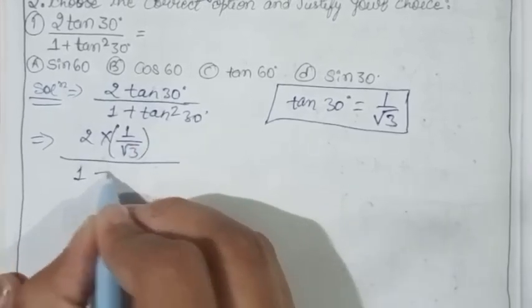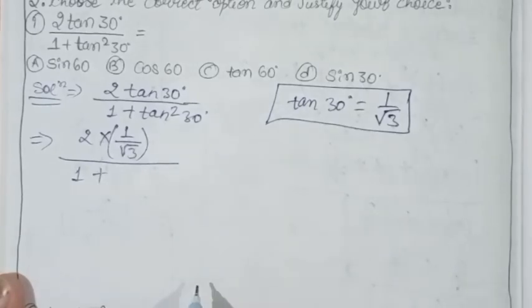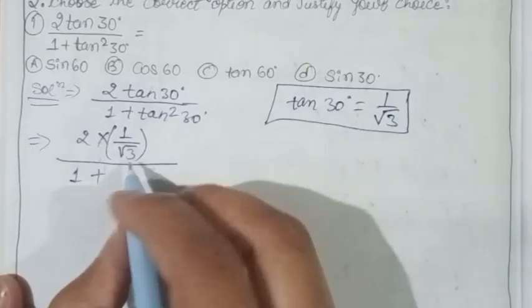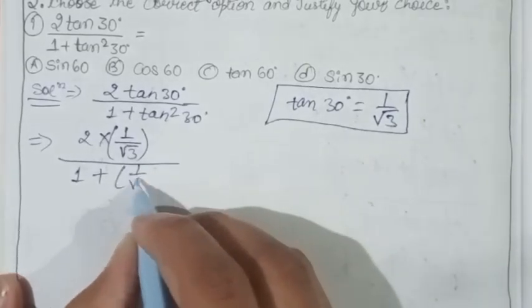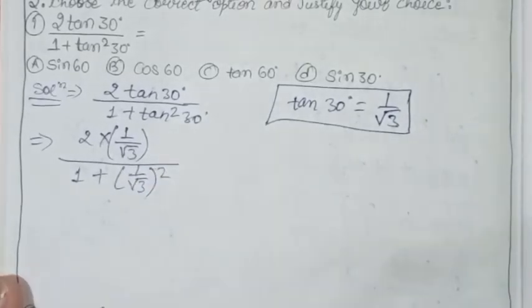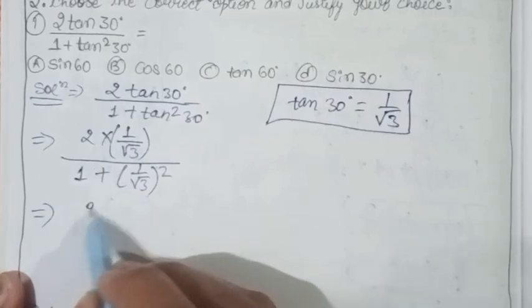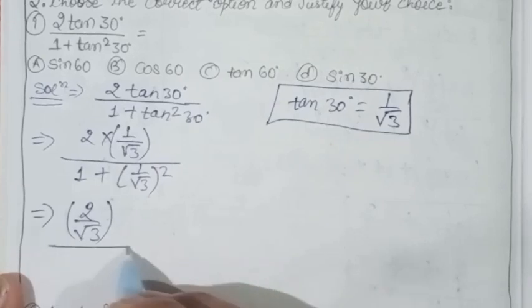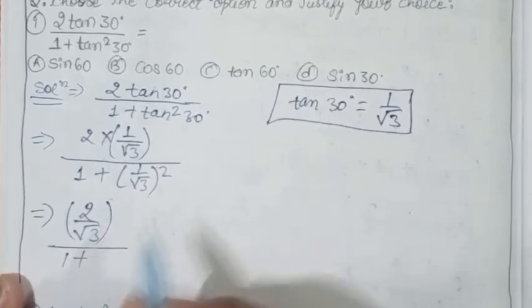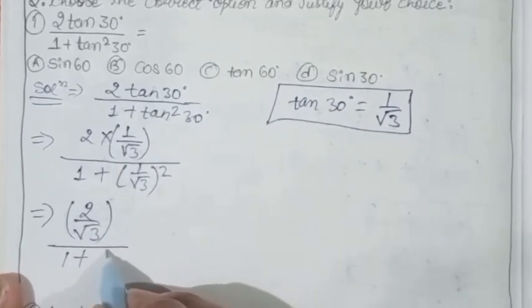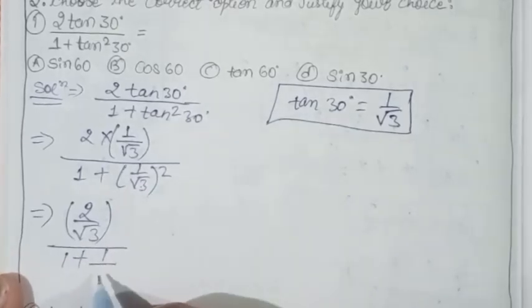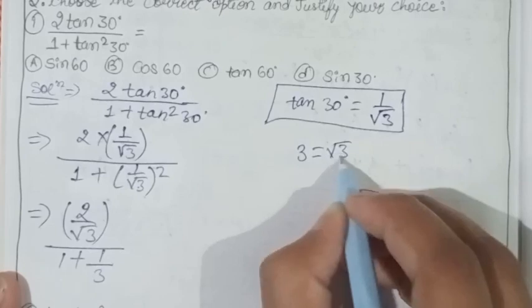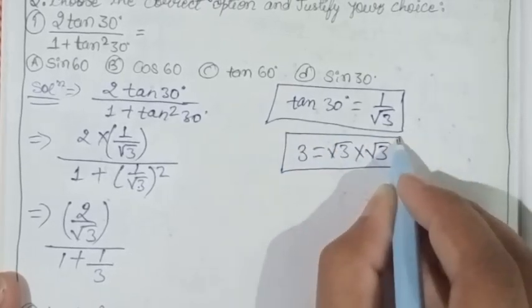Upon 1 plus tan square 30°. This is tan 30°, which equals 1 upon root 3, so we write the value of tan 30° as 1 upon root 3 and then multiply it.